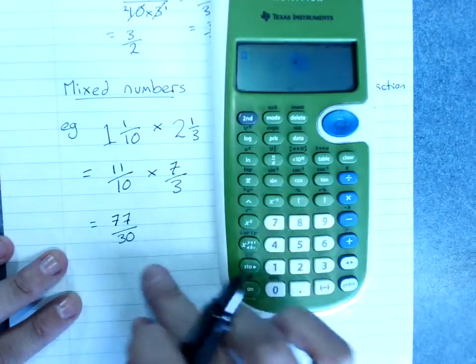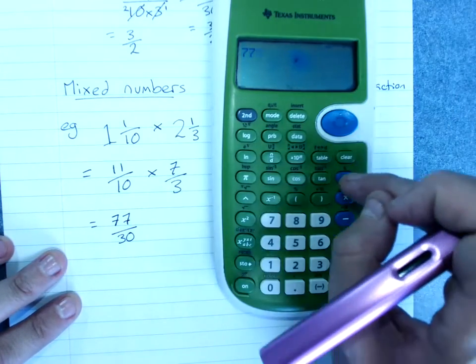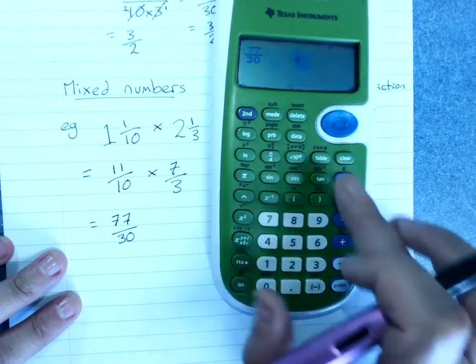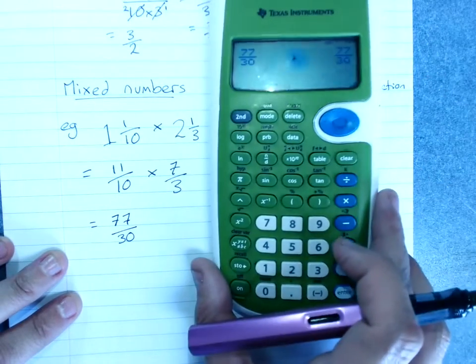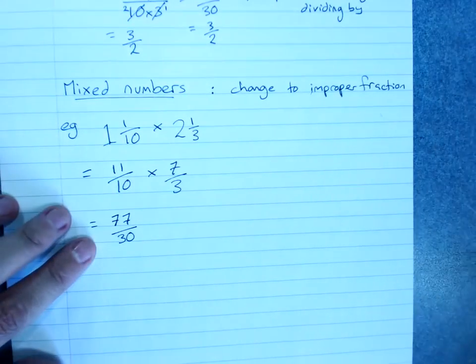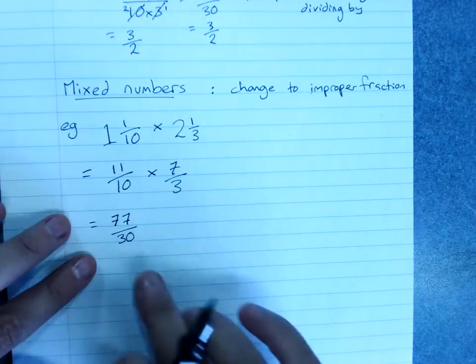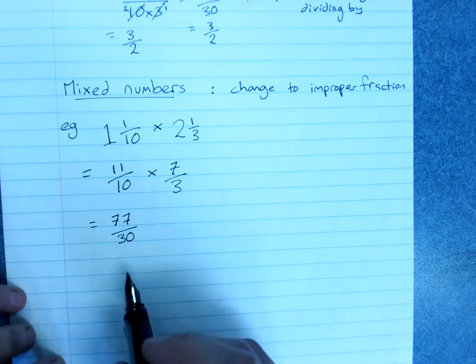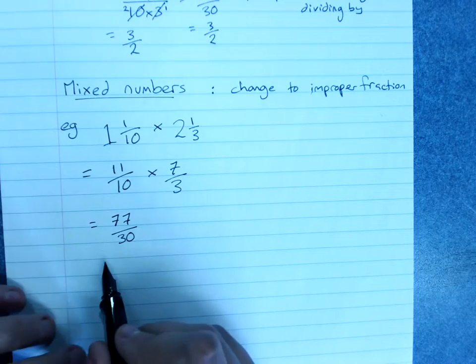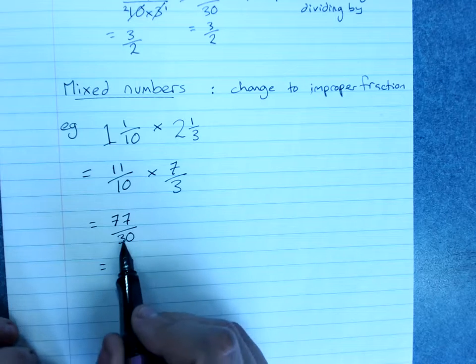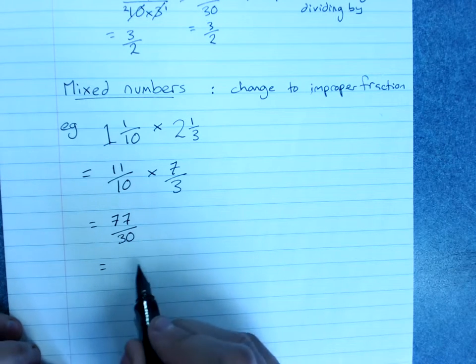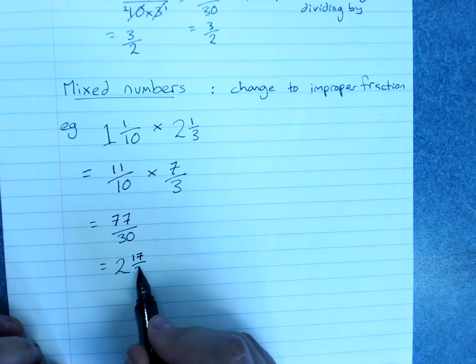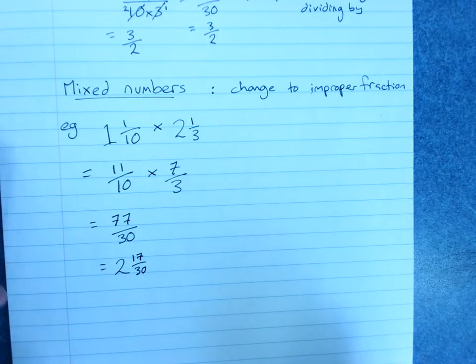If you're not sure if you can simplify it or not, do 77 over 30. Note, we can't simplify it, and so that's our final answer. You're quite welcome to leave that as an improper fraction as your answer. Or, of course, you could change it to a mixed number. 30 goes into 77 twice, because that would be 60, leaving me with 17 over 30 as my fraction.